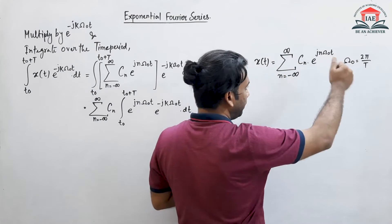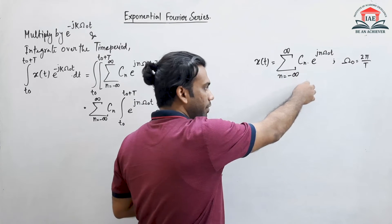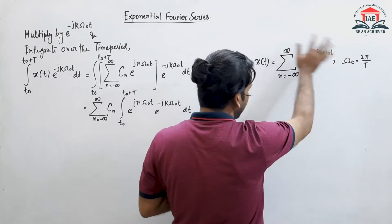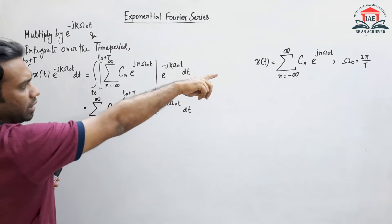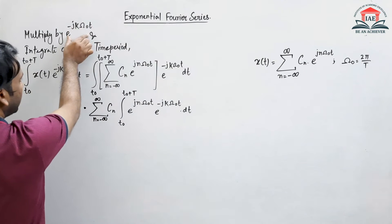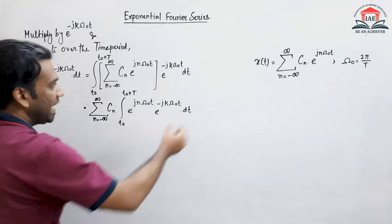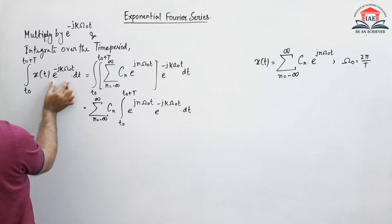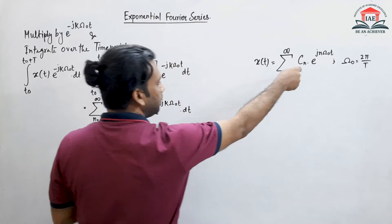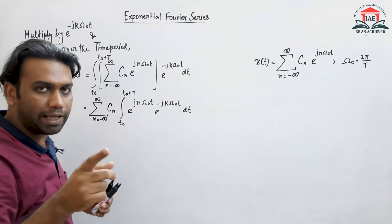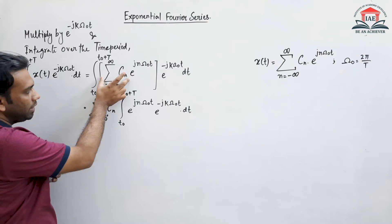So this was the exponential Fourier series. Now we need to find the value of Cn, the exponential Fourier series coefficient. To find the value of Cn, take the full equation and multiply both the left hand side and right hand side by e^(-j·k·omega_0·t), then integrate over the time period. So x(t) multiplied by this function is integrated over the time period, and similarly the summation side has e^(-j·k·omega_0·t) multiplied and integrated.